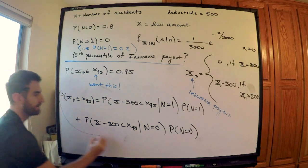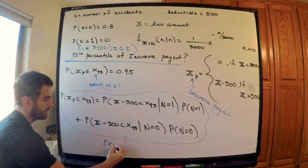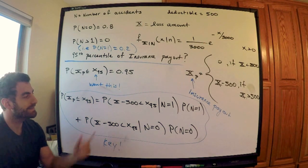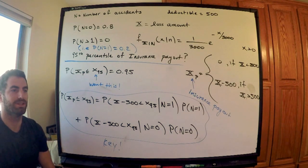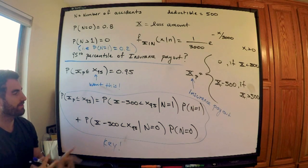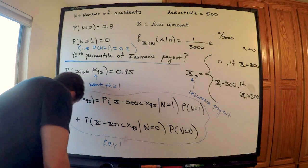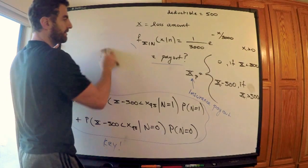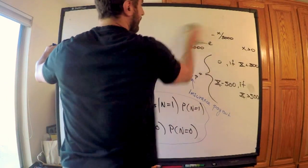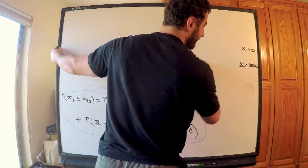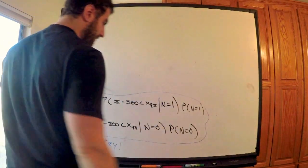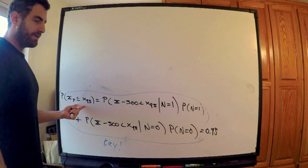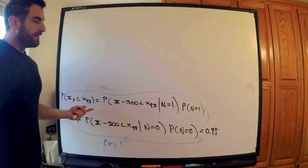This conditional decomposition is the crucial key here. In my studying for Exam P, conditional probability, conditional expectation, and conditional distributions are among the most important things to understand. And this entire expression equals 0.95, because I'm looking at the cumulative distribution at the 95th percentile.